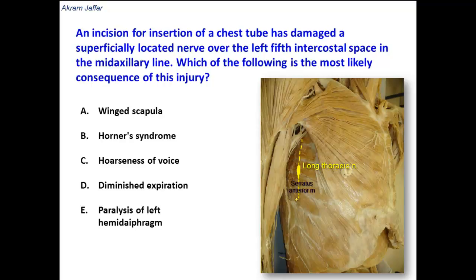If the muscle is paralyzed, this will result in winged scapula. The medial border of the scapula will become prominent posteriorly when the patient is asked to push against a wall or a hard surface. So winging of the scapula is the correct option. Another correct option is difficulty during abduction of the shoulder, or difficulty in combing the hair, especially for a woman.